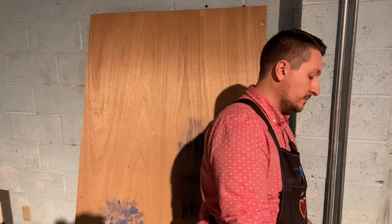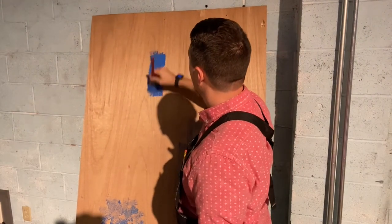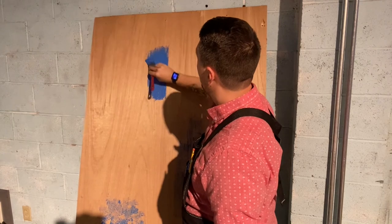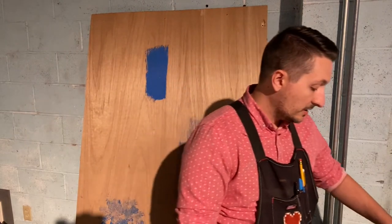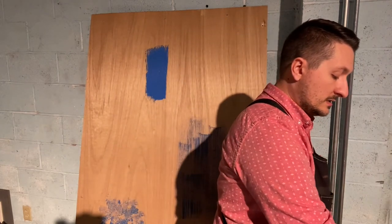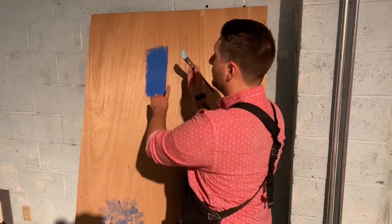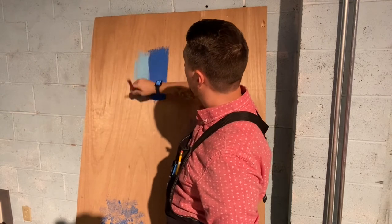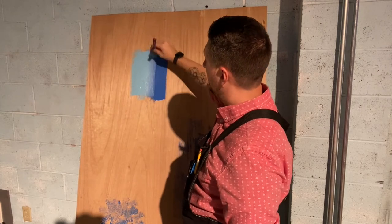I'm going to start with this darker blue and paint a little section here. Now before this dries, I'm going to get my other color — a lighter blue. It looks really nice if you use two shades of the same color, but you can blend other colors as well. So I have my light blue and I'm going to blend it this way, starting over here and coming into the dark blue. As you can see, it's starting to blend — you're getting a gradient color.